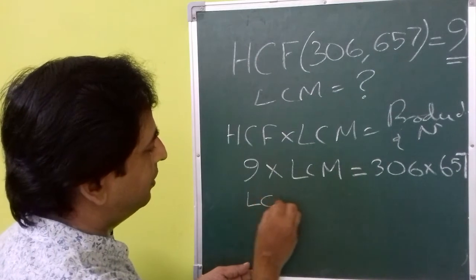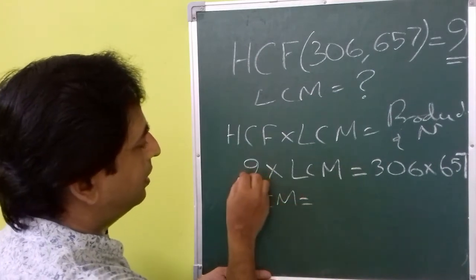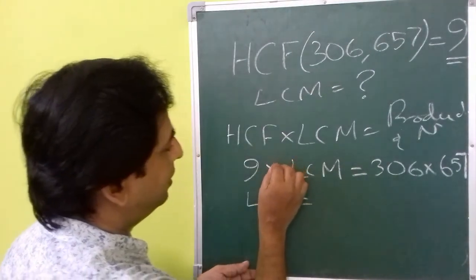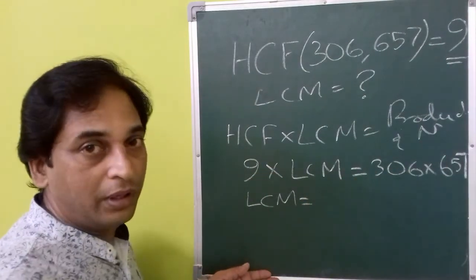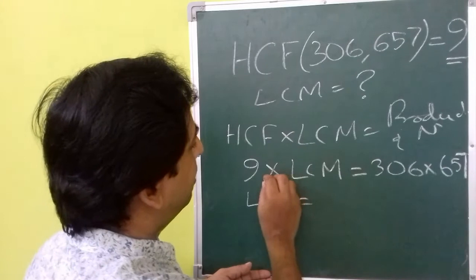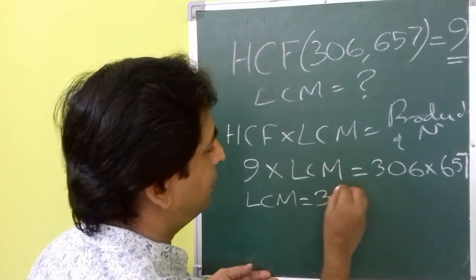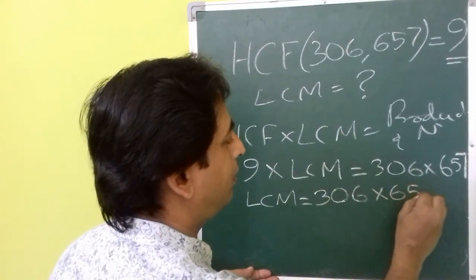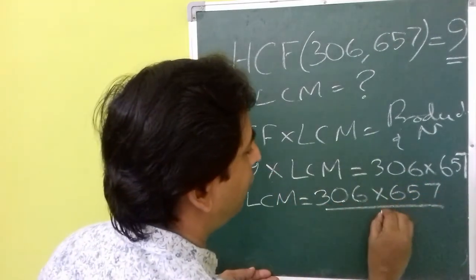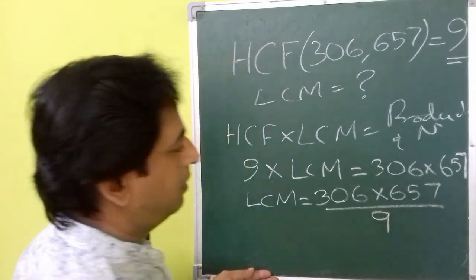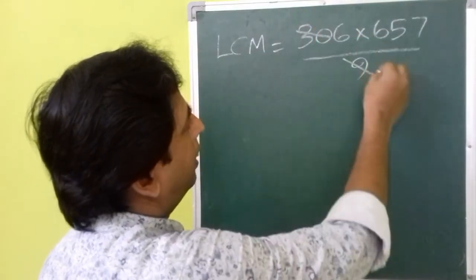That means LCM is equal to—we are going to take this 9 to the other side. As this is multiplication on the left side, on the right side of the equal sign that will become division. That means 306 multiplied by 657 divided by 9.